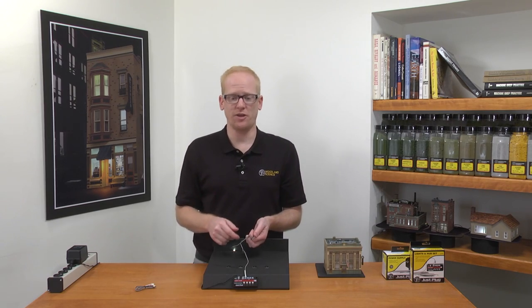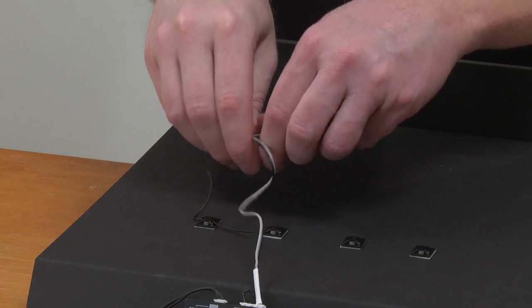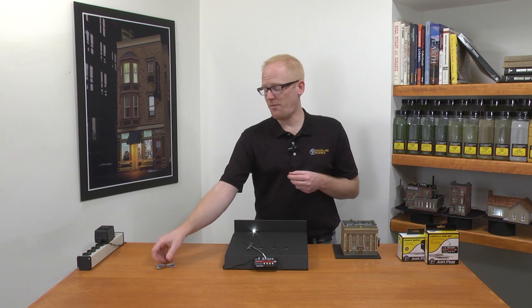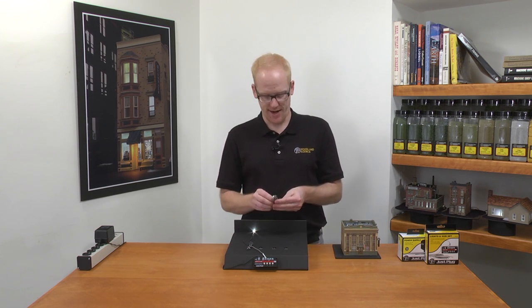Next, I will secure the excess wire using a wire mount from the TidyWire kit. Installing the remaining lights follows the exact same process.